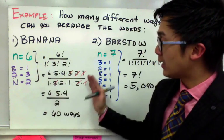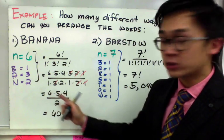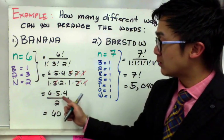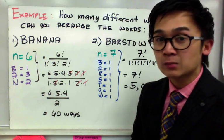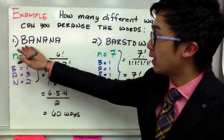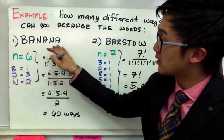By evaluating it, we can cancel all the common terms, and we are left with 6 times 5 times 4 divided by 2, which gives us 60.